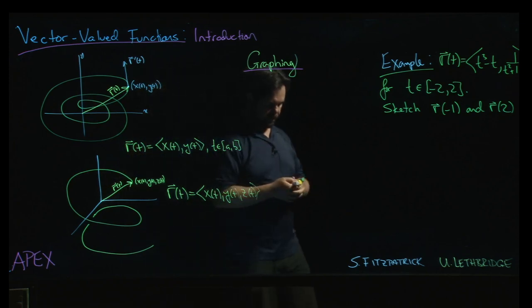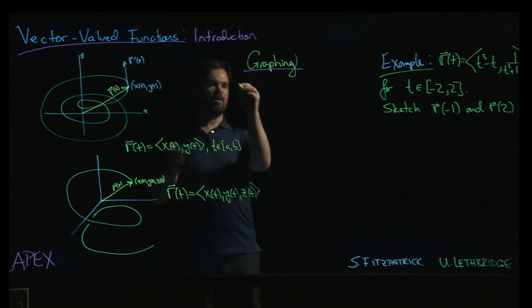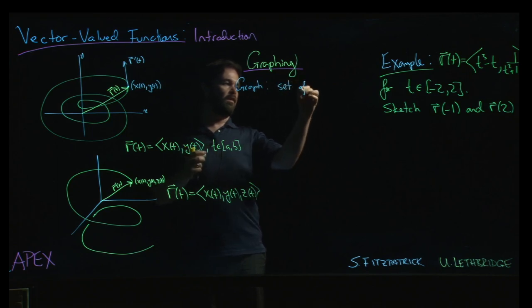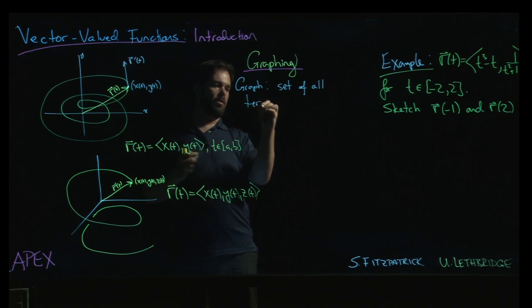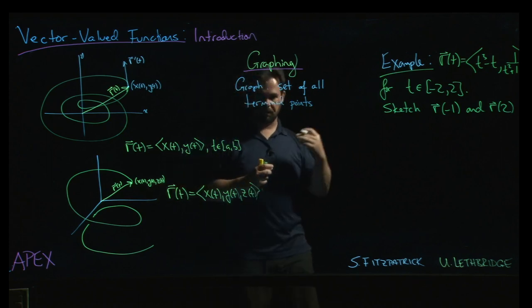So the graph of a vector-valued function, the way we think of it is basically the set of all terminal points or tips or endpoints, however you want to refer to the tip of the vector.